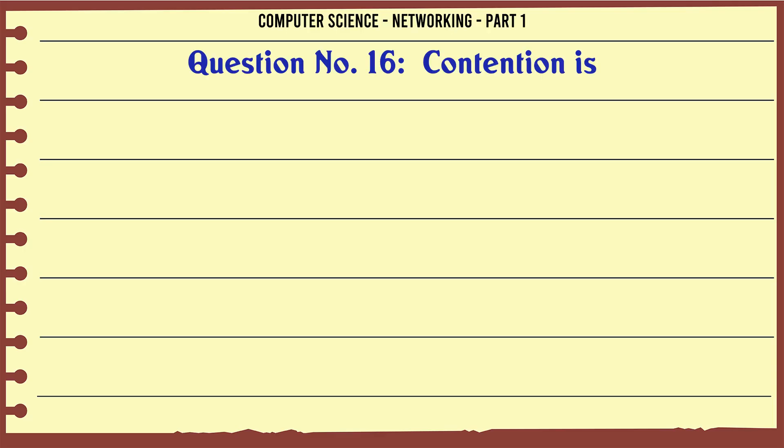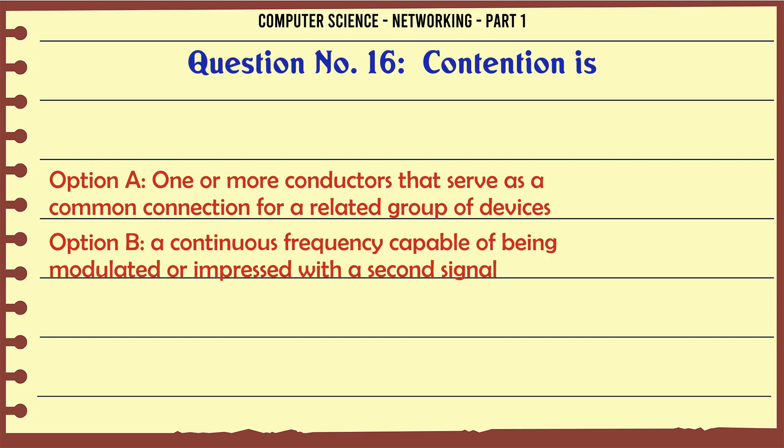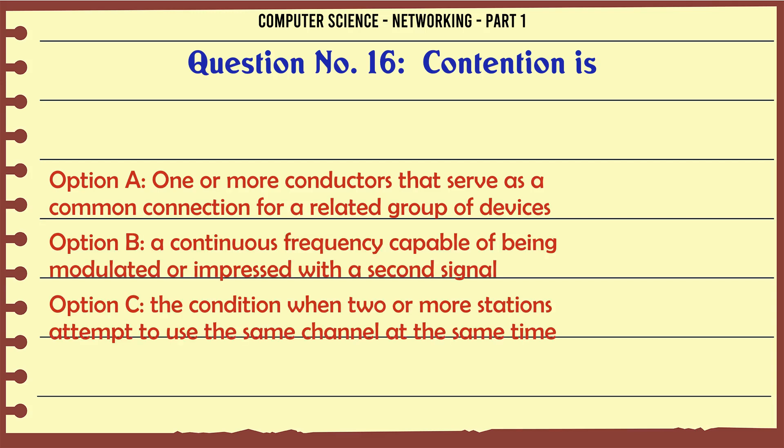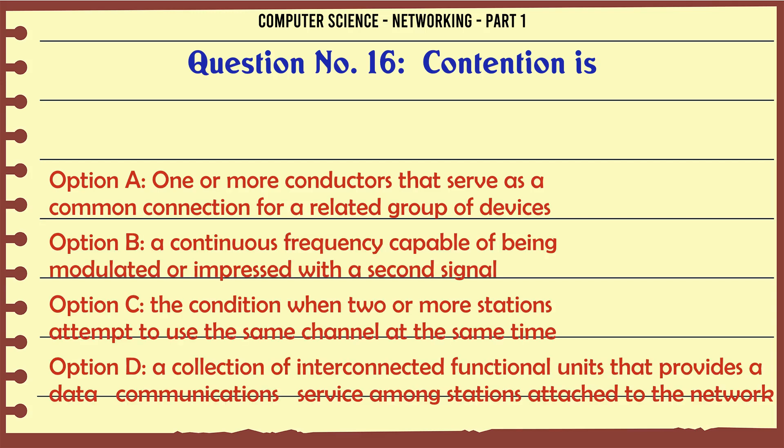Contention is: A. One or more conductors that serve as a common connection for a related group of devices. B. A continuous frequency capable of being modulated or impressed with a second signal. C. The condition when two or more stations attempt to use the same channel at the same time.